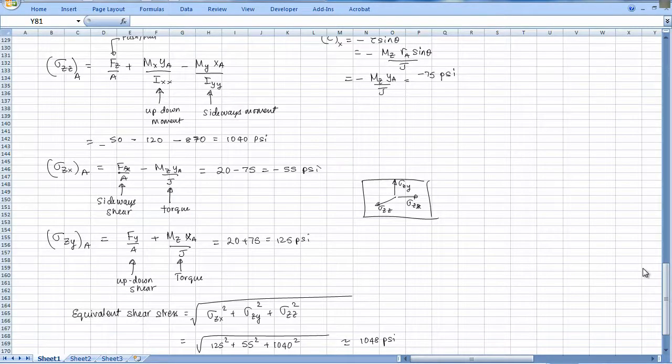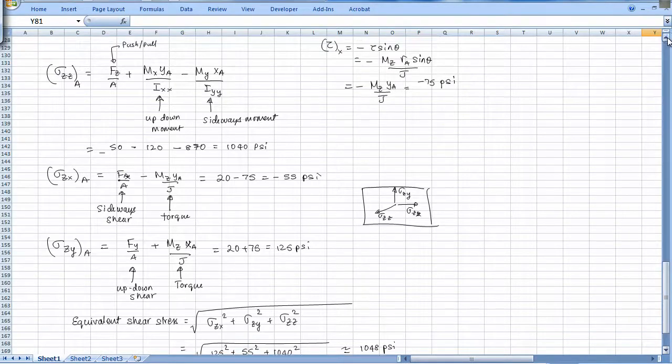We are continuing our discussion of welds. The basic way to compute what happens to welds is to look at the weld surface, the surface on which the weld actually sits.